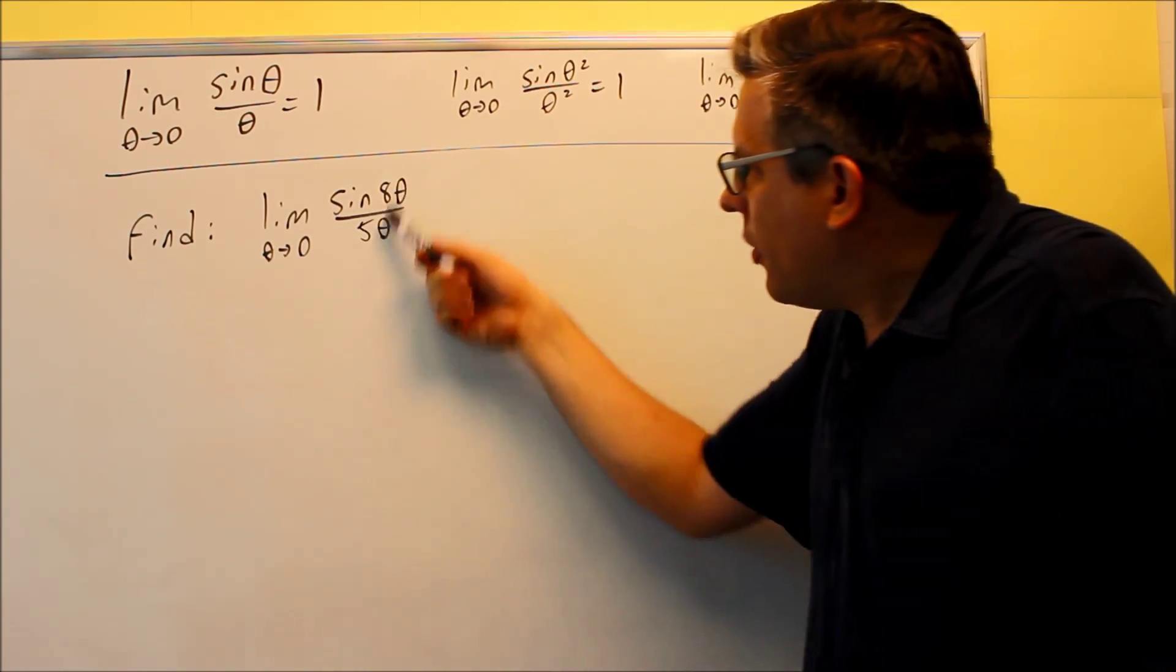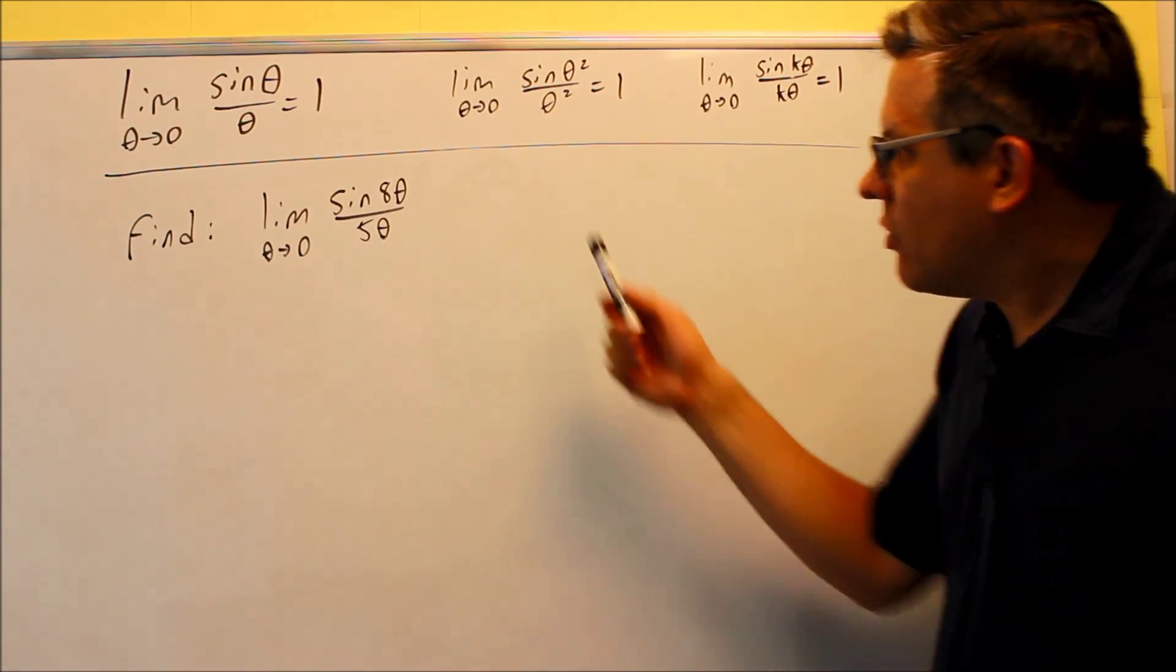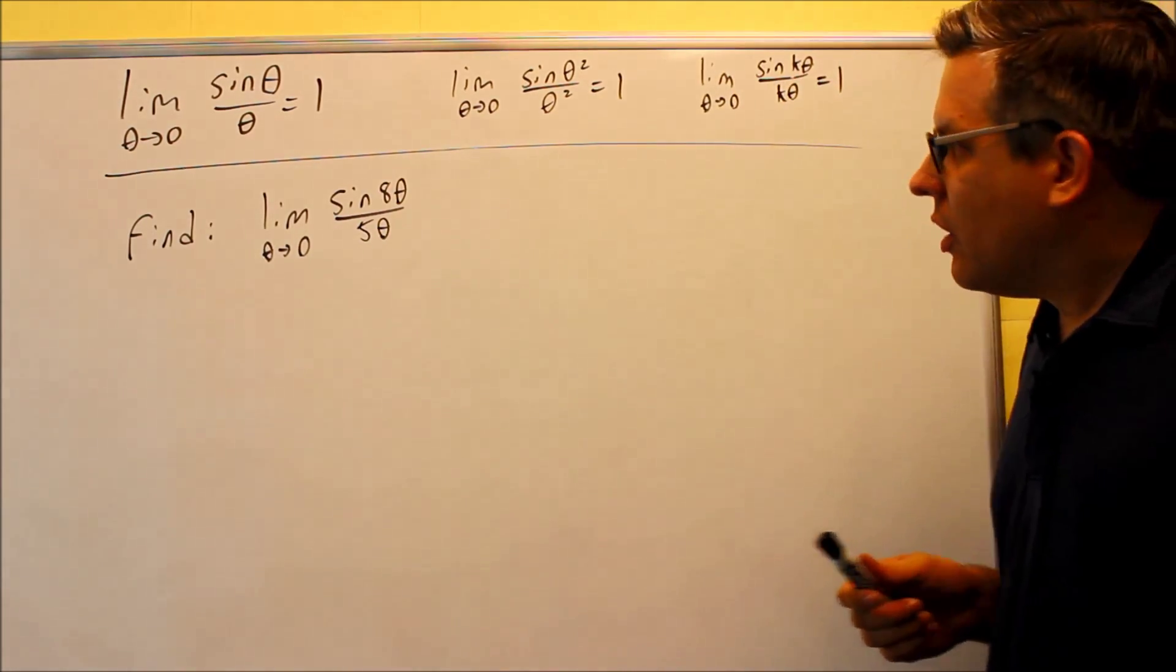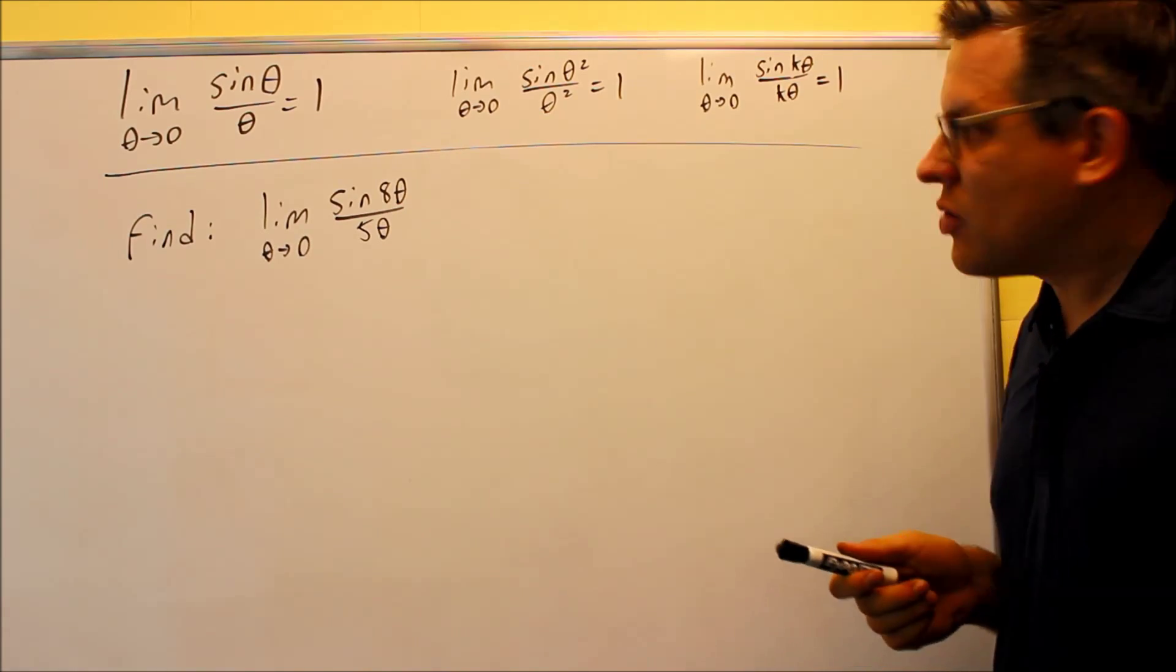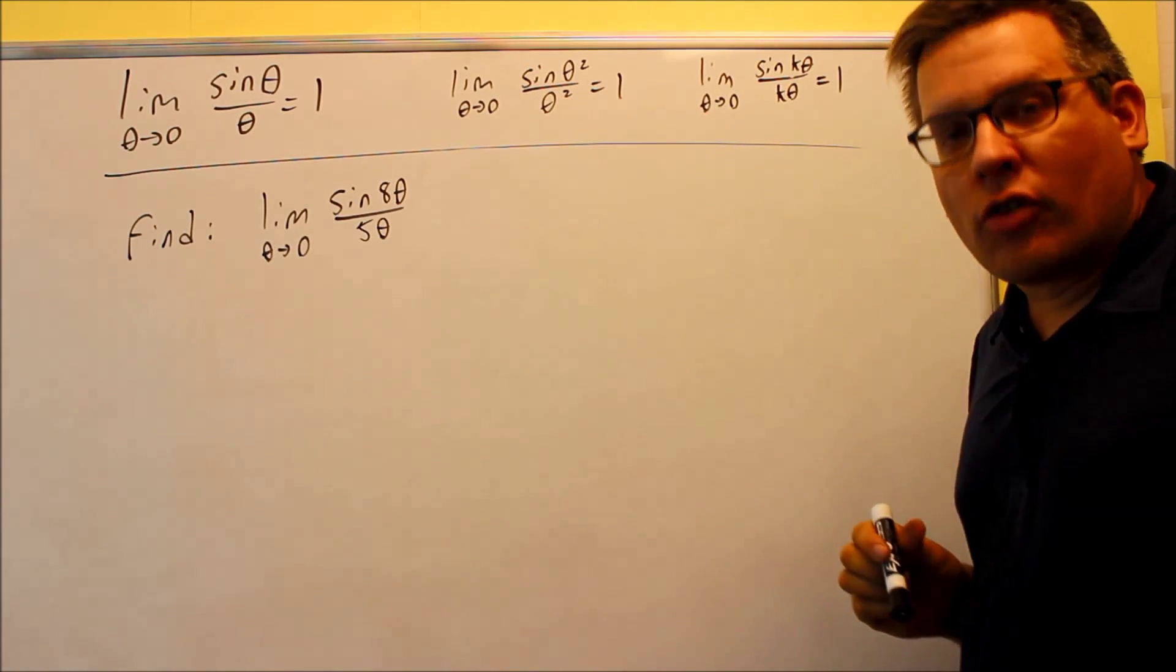Now unfortunately, the numbers do not match. So I can't just automatically put one for the answer. I have to do something algebraically to this one in order to end up getting something that looks like this. So somehow, I have to create a sine of eight theta over eight theta.